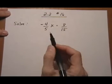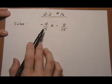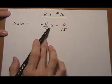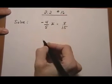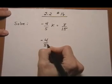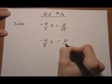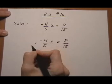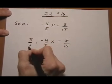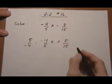So, we're going to use the same process. We're going to multiply by the reciprocal of the fraction that's next to the x. So, let's bring it down here, get a bit more space. Multiply by 5 over minus 4, both sides.